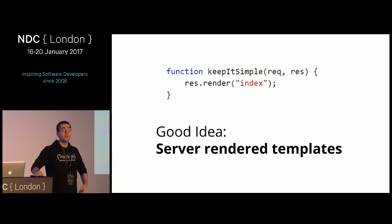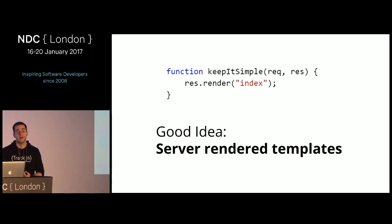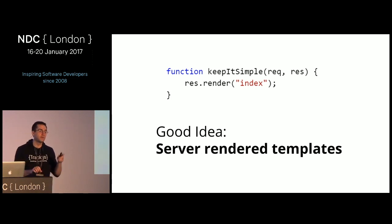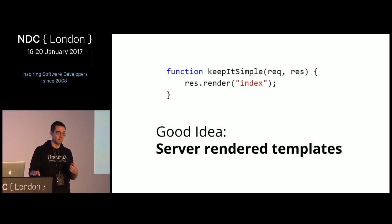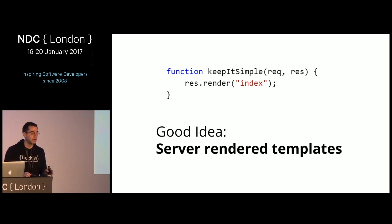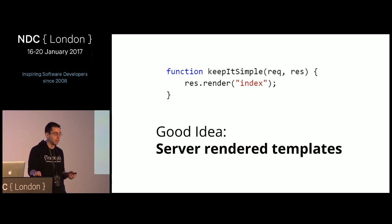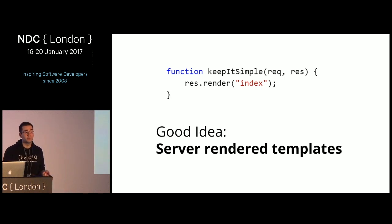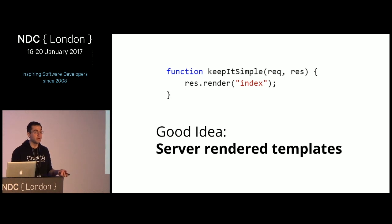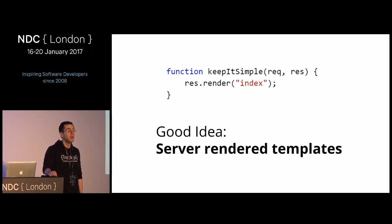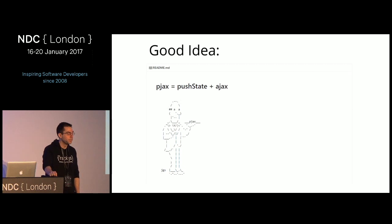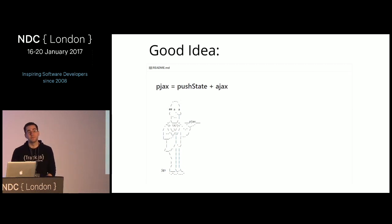The marketing site and documentation site for Track.js are both built with Jekyll, but they do have JavaScript interactivity — we just submit the code to GitHub and they do the build and host it. Server-rendered templates are still a good idea too; we've been doing server rendering for a long time and we're pretty good at it. It's actually not the end of the world to make a full request-response cycle — browsers are really good at that model.